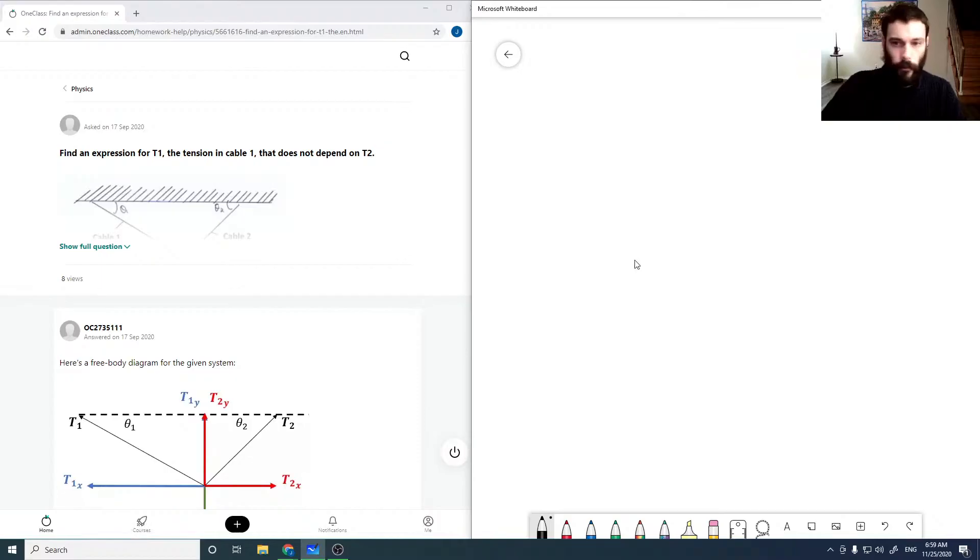Okay, all right. So now for the next problem, find an expression for T1, the tension of the cable, that does not depend on T2. So I'm just going to draw this out. We've got a wall up here and a cable and a mass hanging from this cable.